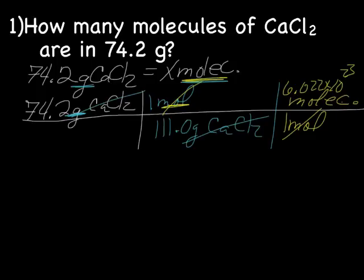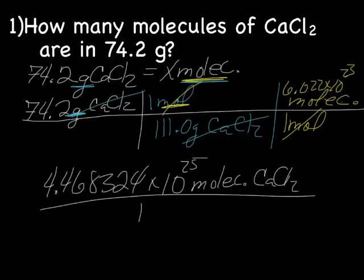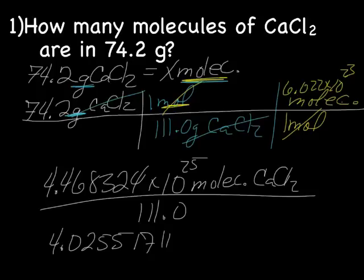When I did that, I got 4.468324 times 10 to the 25th molecules of CaCl2. Multiply across the bottom, it's 111.0. And when we divide, I came up with 4.025517 times 10 to the 23rd molecules CaCl2.